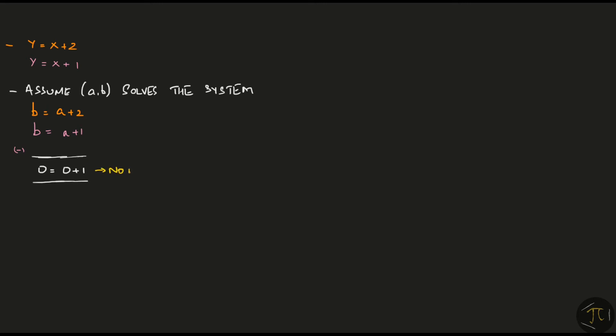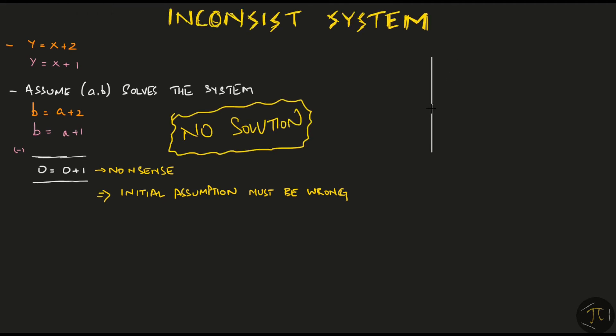But we get 0 equal to 1, which is clearly nonsense. This means that our initial assumption must be wrong. There cannot be any point AB such that it satisfies both equations simultaneously. Such a system of equations that has no solution is called an inconsistent system.